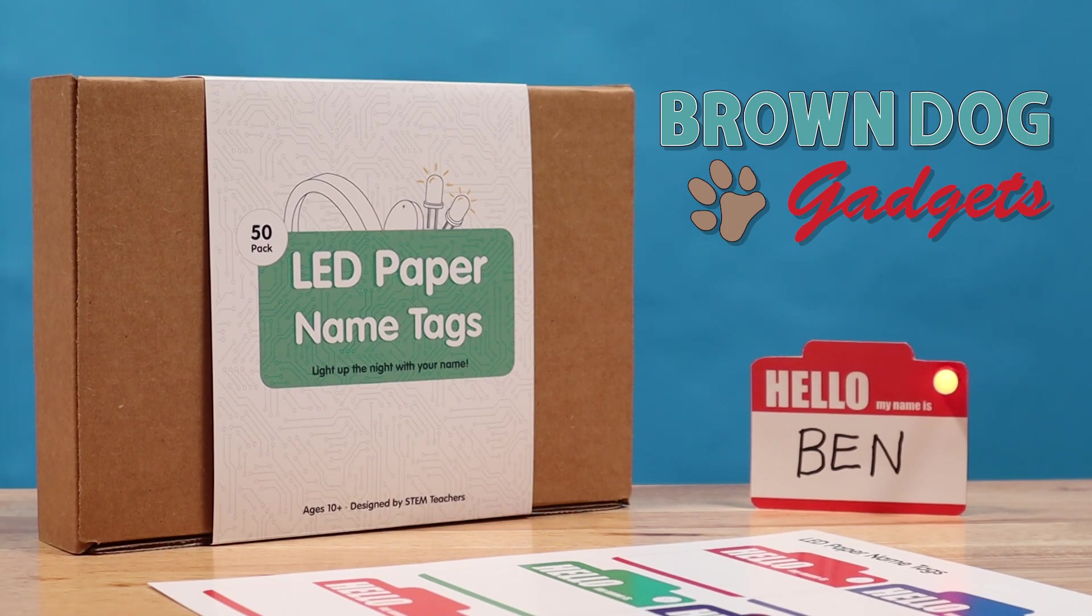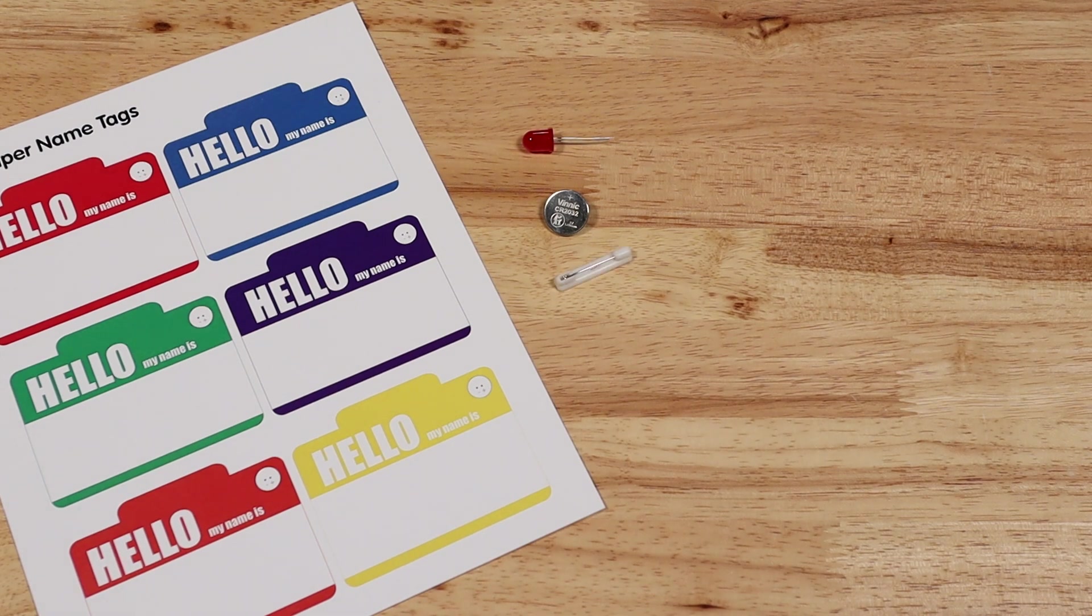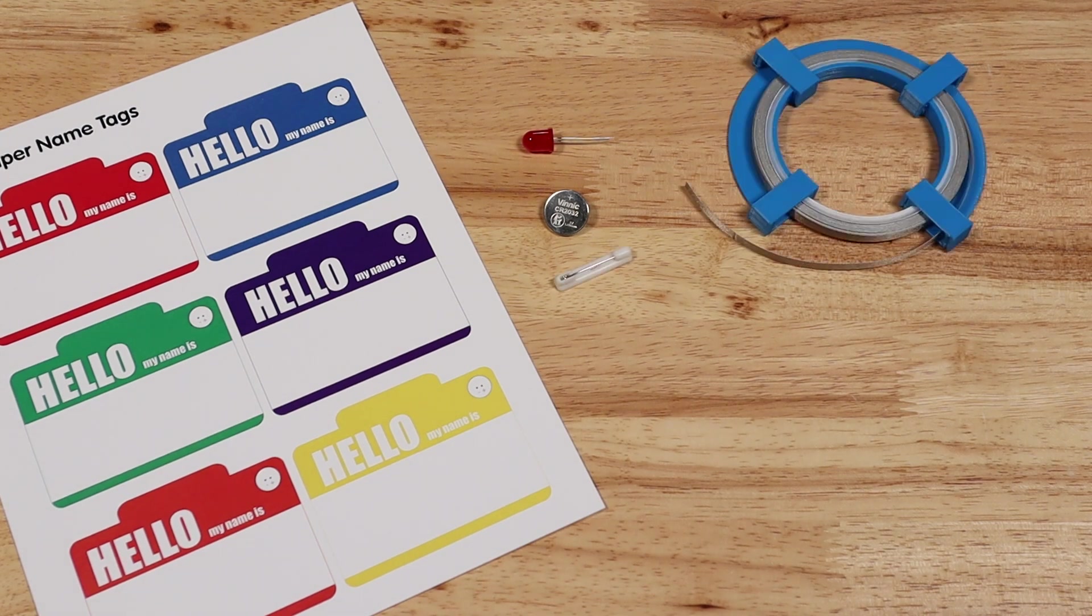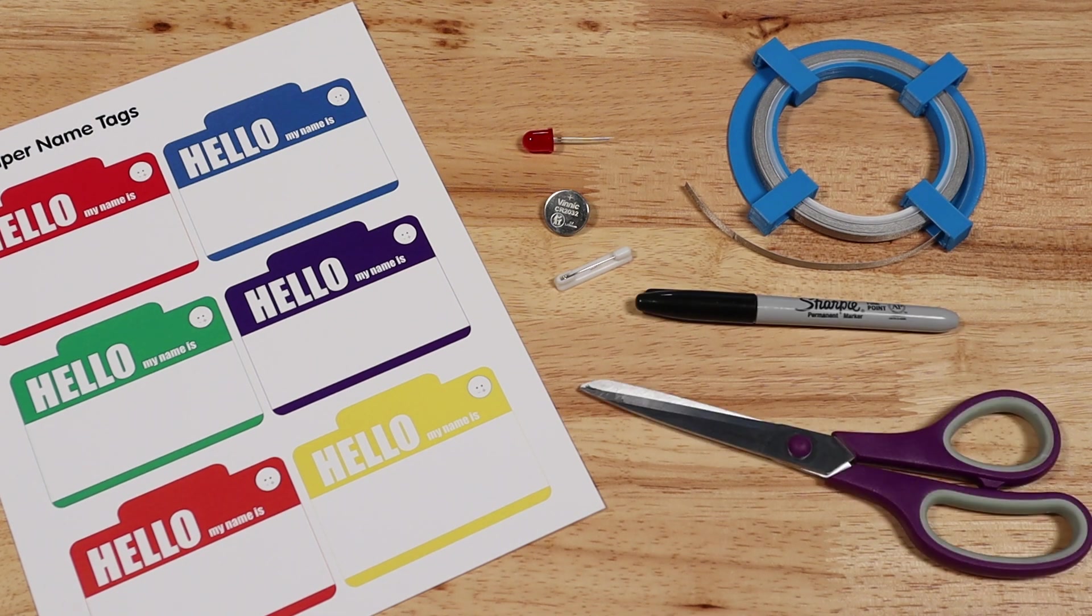Today we're going to show you how to make your own LED paper name tag from Brown Dog Gadgets. You'll need the paper name tag, an LED, a battery, a peel and stick pin, conductive maker tape, a marker pen or colored pencils, and scissors.